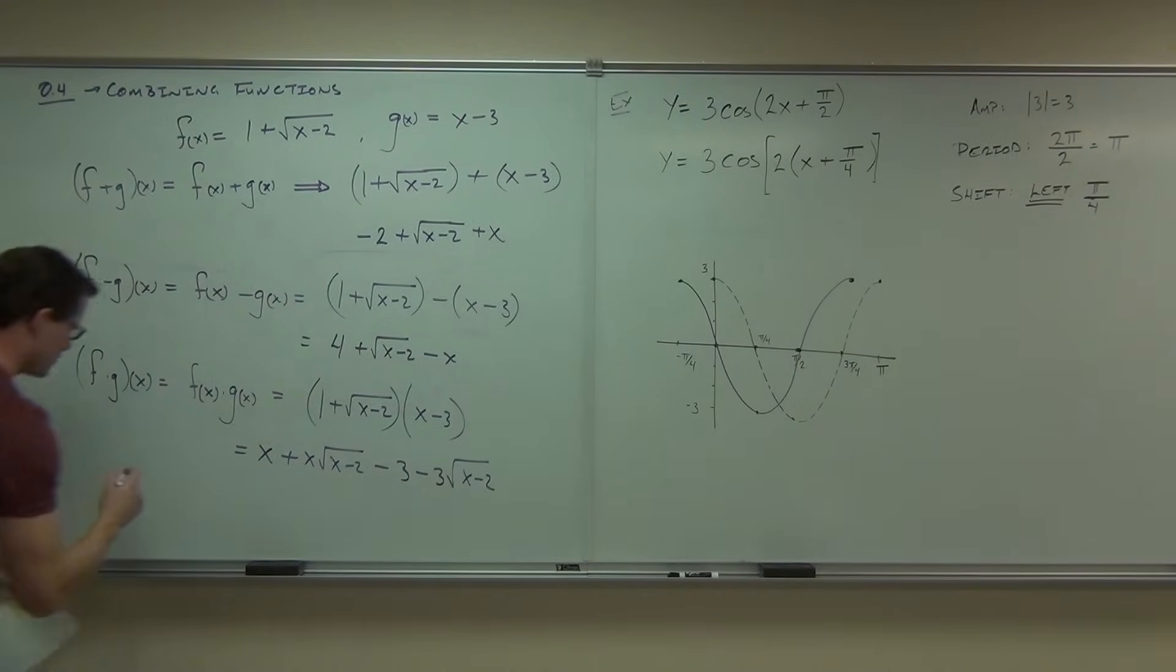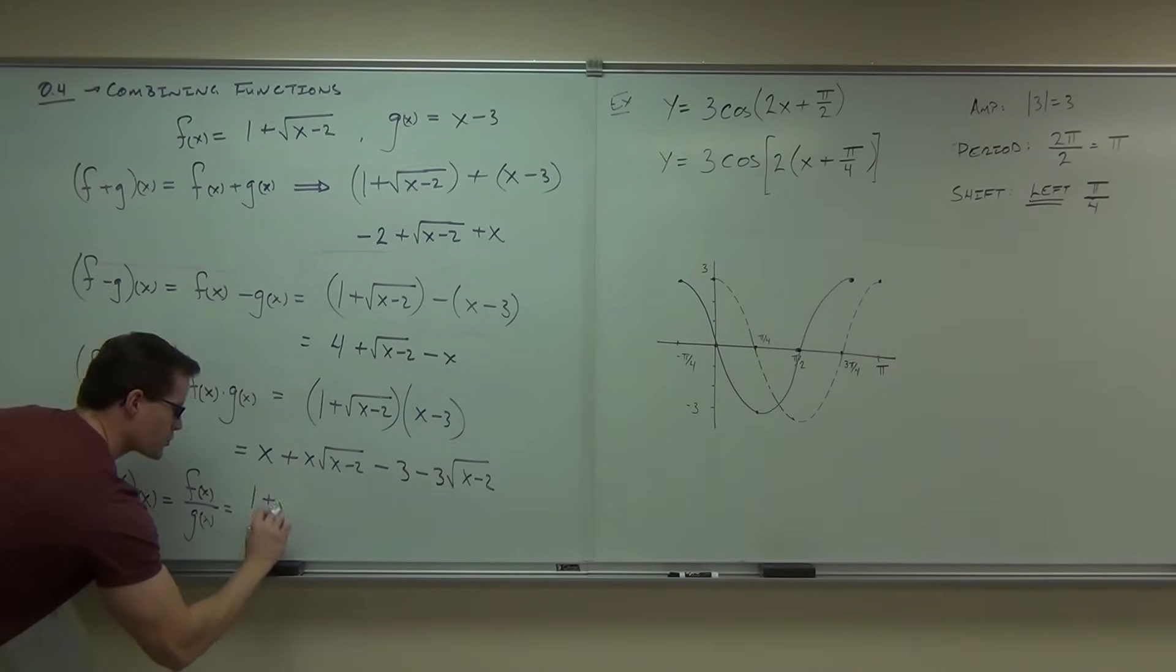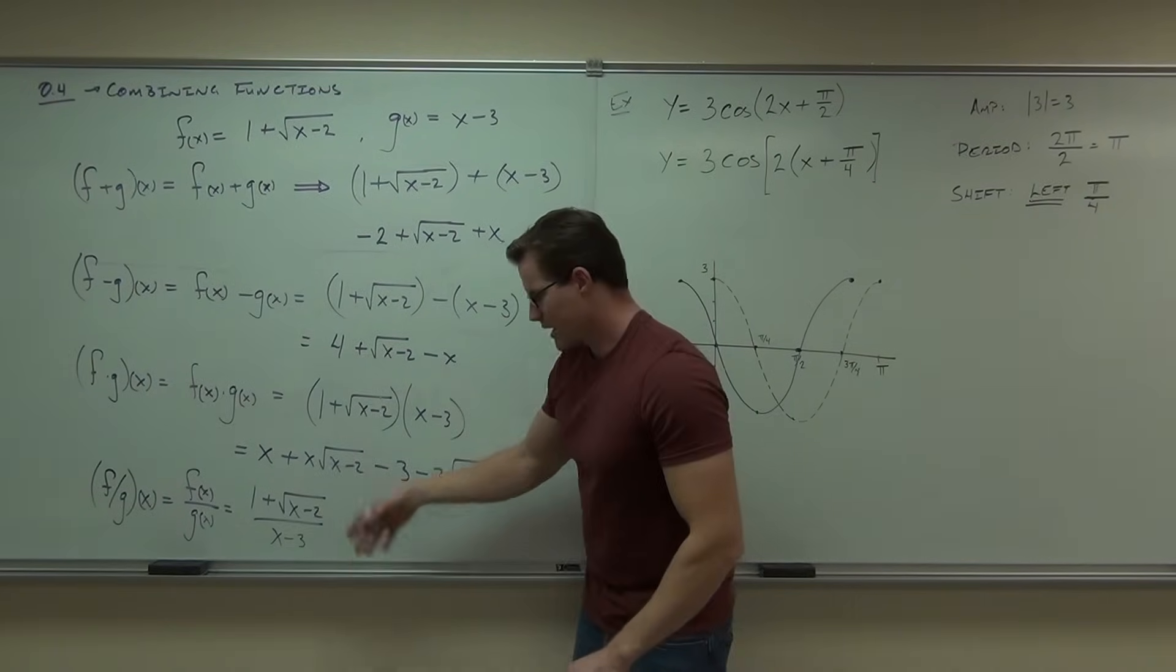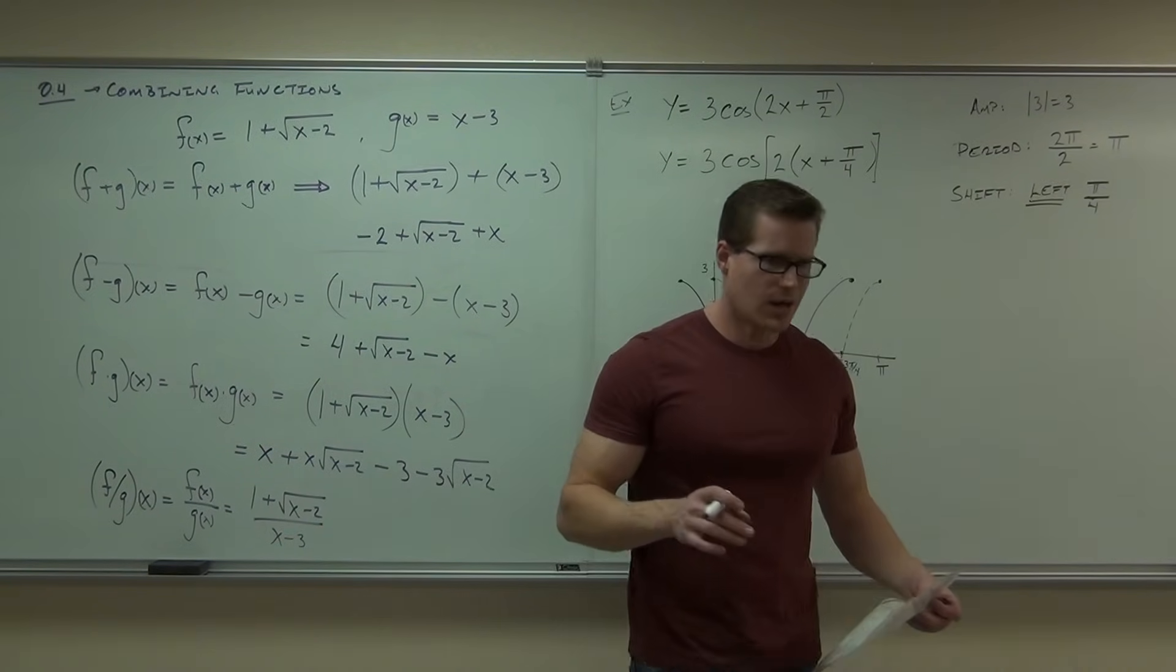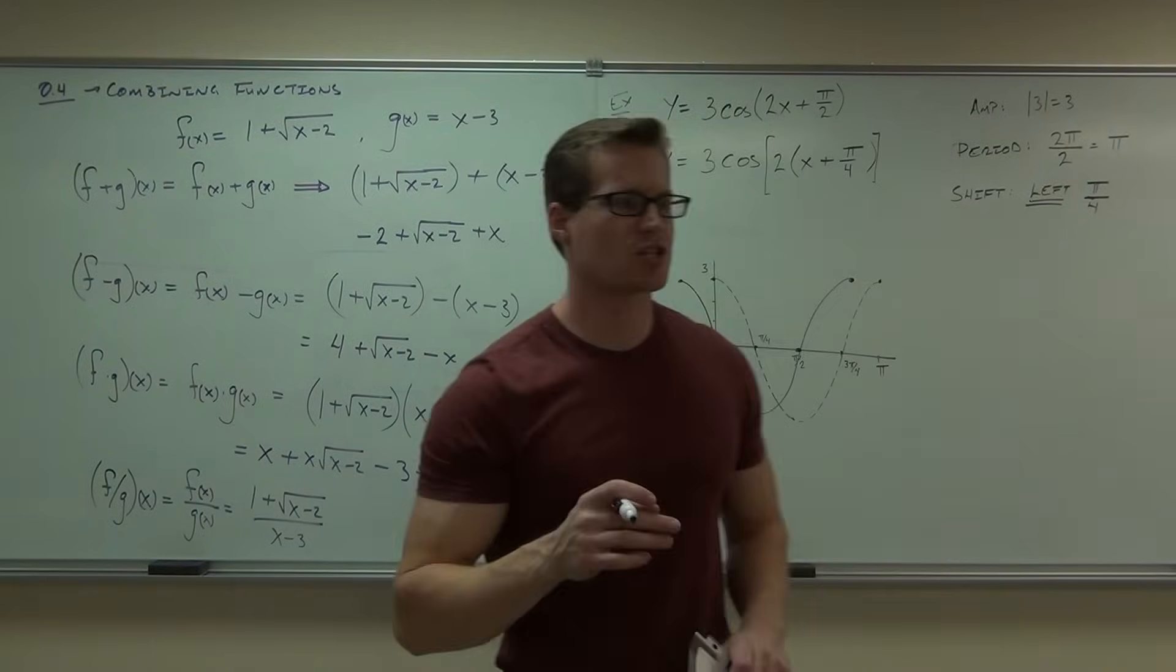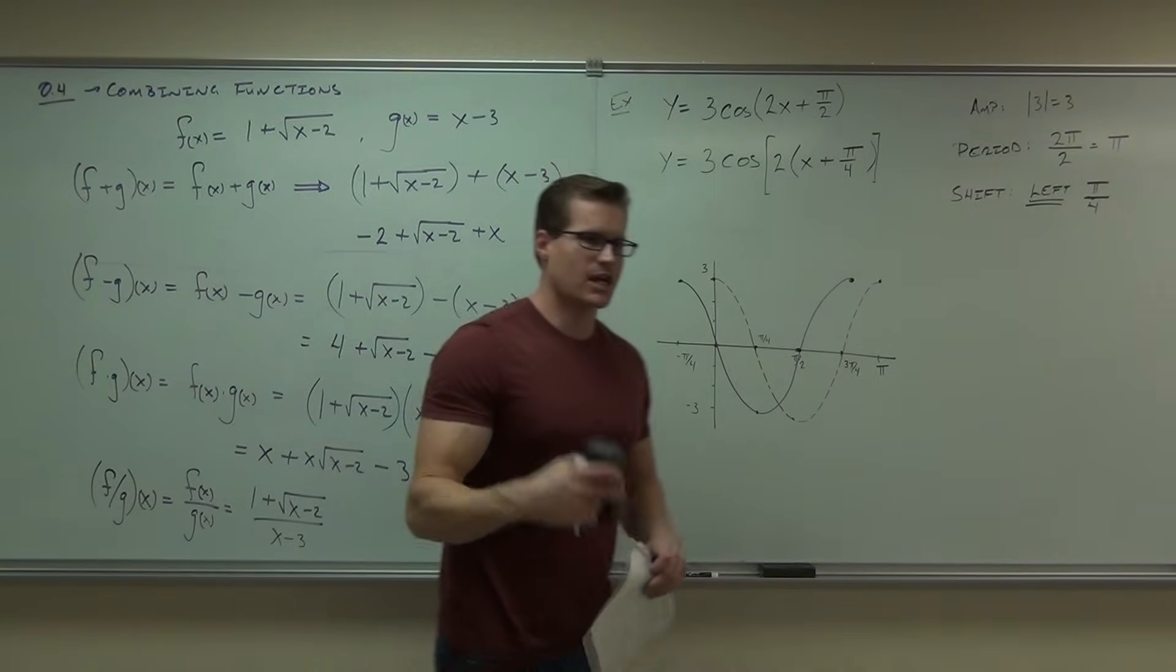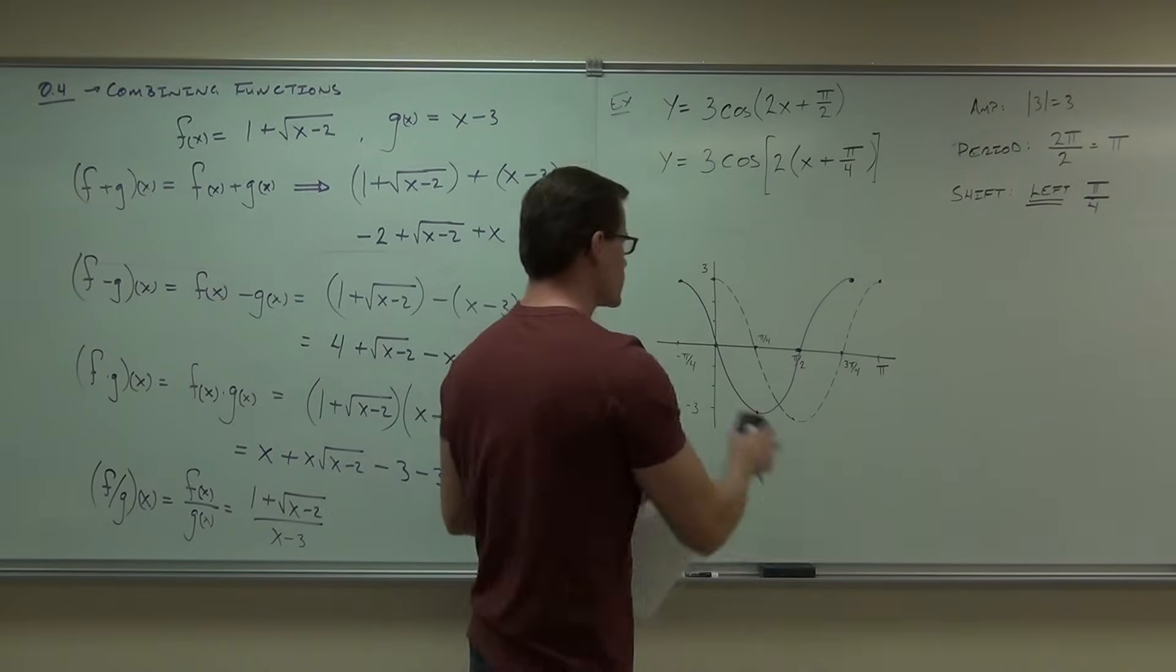The only thing we can do with our basic operations is f over g of x. In this case, we just put one function over the other in the appropriate order and make sure we have a new domain restriction. In our case right here, you knew that x could not be equal to 3. Also, one note that I do need to make. When you're doing these functions and they're asking you to find the domain, I'll write this out for you. The domain is the intersection of the domains of the original functions. You can't ever get rid of domain problems. All you can do is make more of them.